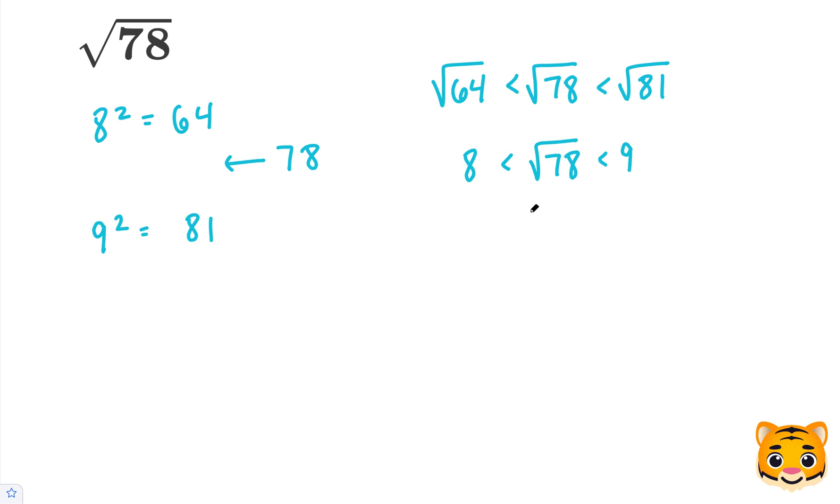So we know the square root of 78 is between 8 and 9. However, because 78 is a lot closer to 81, we know that our decimal approximation will be closer to 9. So we can try out values like 8.8 times 8.8 to see how close we can get to 78.